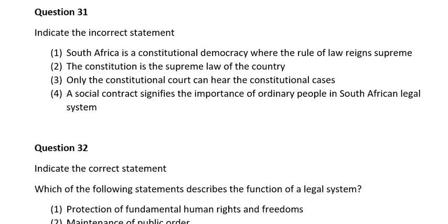Question thirty-one. Indicate the incorrect statement. Number one, South Africa is a constitutional democracy where the rule of law reigns supreme; number two, the constitution is the supreme law of the country; number three, only the constitutional court can hear constitutional cases; number four, a social contract signifies the importance of ordinary conflict in South African legal system. The correct answer is number one: South Africa is a constitutional democracy where the rule of law reigns.